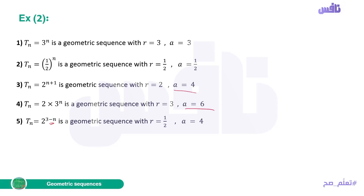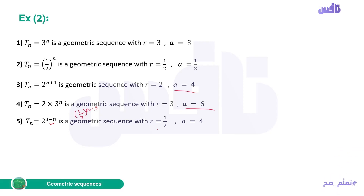For Tn = 2^(3−n): the exponent is negative N, so take the negative outside. This flips 2 to become 1/2, giving Tn = (1/2)^(n−3) form. So R equals 1/2. To find A, substitute n=1: (1/2)^(1−3) = (1/2)^(−2) = 2^2 = 4.